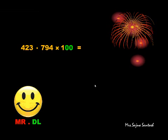Four hundred and twenty-three point seven nine four, multiplied by hundred. Since it is multiplication, I'll be jumping to the right. And I have got two friends here — two zeros in hundred — so I'll jump twice. Let's see the answer. And the answer is forty-two thousand three hundred and seventy-nine point four.